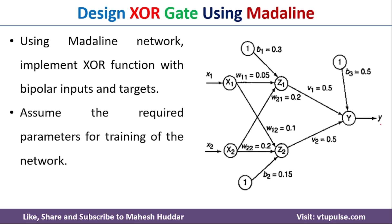Once we get the output at the output layer, we compare it with the target. If both are the same, there is no need to update the weights. If the target and the calculated output are not the same, we go back and modify the weights. Madaline has one very peculiar property: we don't update the output layer weights or the bias — they remain constant throughout training.